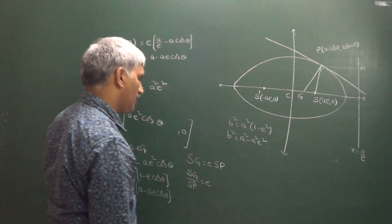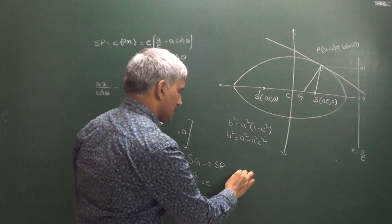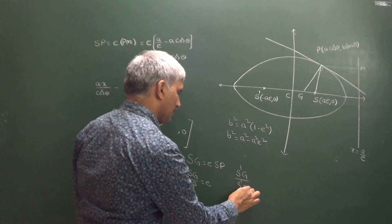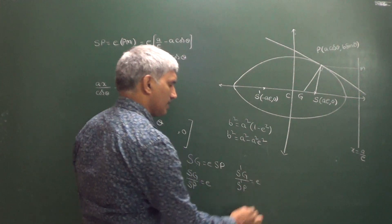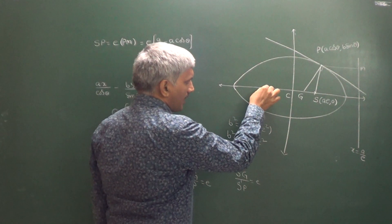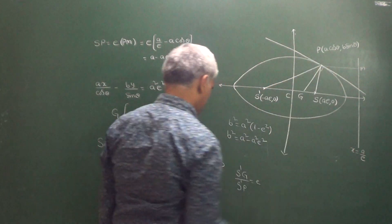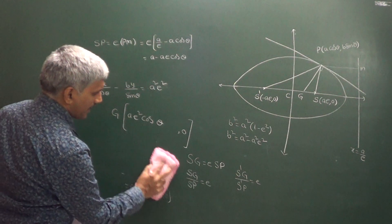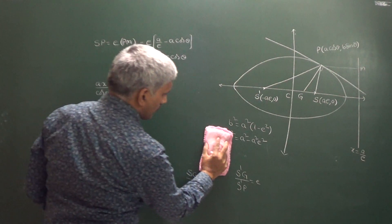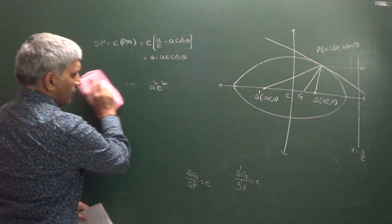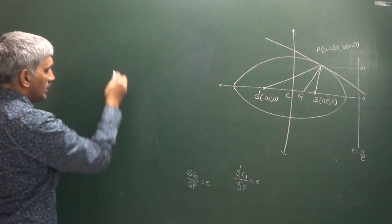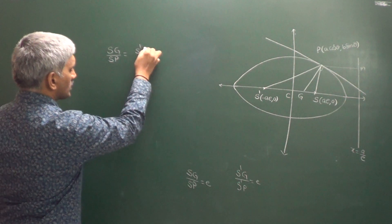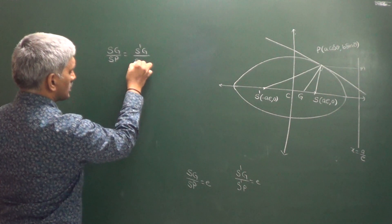In a similar way, we can prove that S'G divided by S'P also equals E. So we have SG/SP = E and S'G/S'P = E, meaning SG/SP = S'G/S'P.